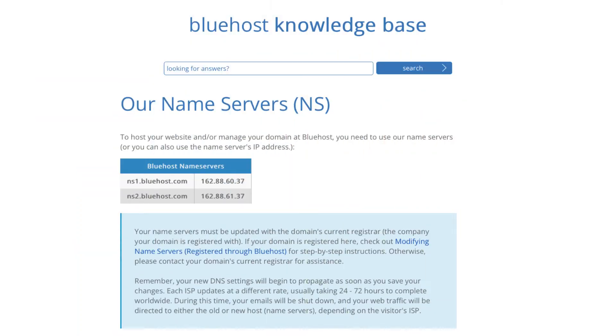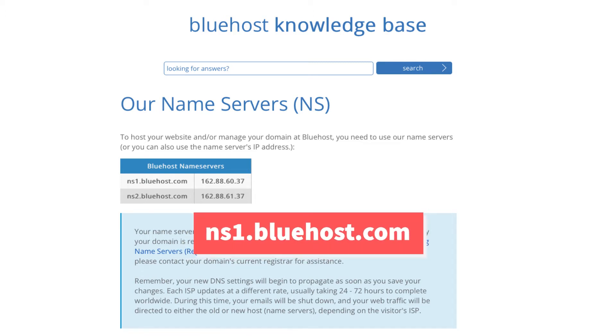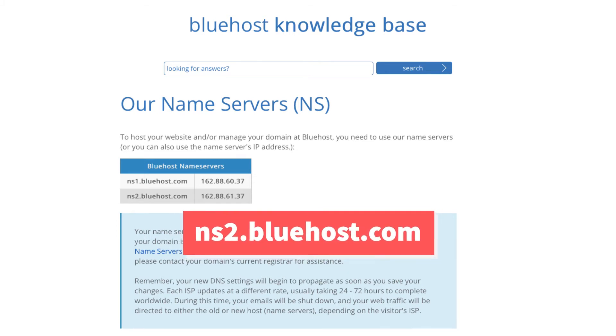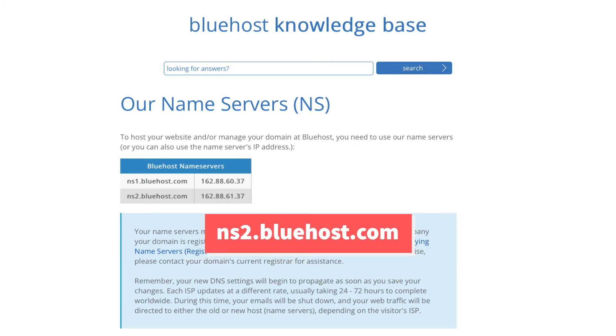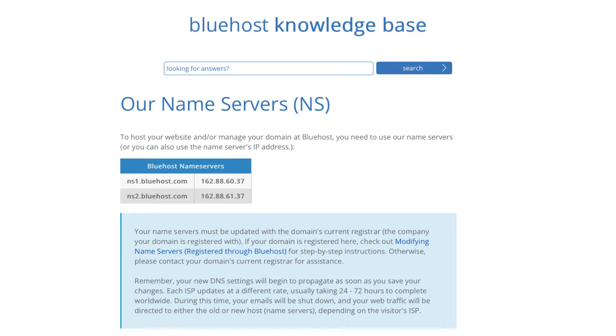Let's get started. The first thing you want to do is get the Bluehost nameservers. The Bluehost nameservers are the same for every account: ns1.bluehost.com and ns2.bluehost.com. You'll also see the nameserver IP addresses listed next to these, which can also be used to point your Namecheap domain to Bluehost hosting.